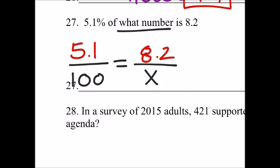So we use cross multiplication. 5.1x equals 8.2 times 100, which would be 820.